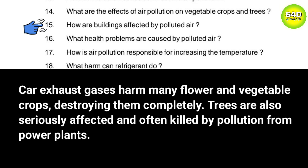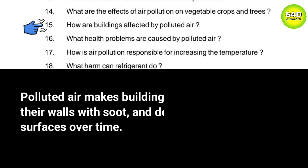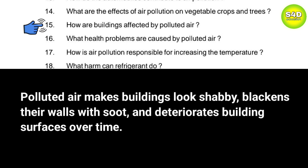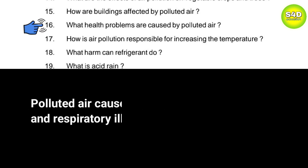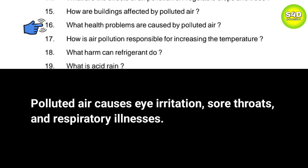Question 15: How are buildings affected by polluted air? Answer: Polluted air makes buildings look shabby, blackens their walls with soot, and deteriorates building surfaces over time. Question 16: What health problems are caused by polluted air? Answer: Polluted air causes eye irritation, sore throats, and respiratory illnesses.